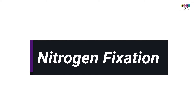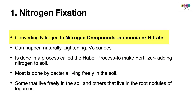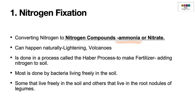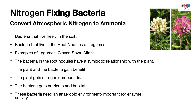The nitrogen cycle begins with nitrogen fixation — converting atmospheric nitrogen into nitrogen compounds such as ammonia or nitrate. It can happen naturally through lightning, volcanoes, and the Haber process, which converts atmospheric nitrogen into nitrate for fertilizer. Mostly, though, it's done by free-living bacteria in the soil, which convert atmospheric nitrogen into ammonia.